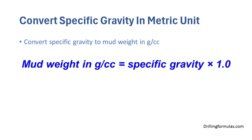Convert specific gravity to mud weight in gram per cc using this formula: mud weight in gram per cc is equal to specific gravity multiplied by 1.